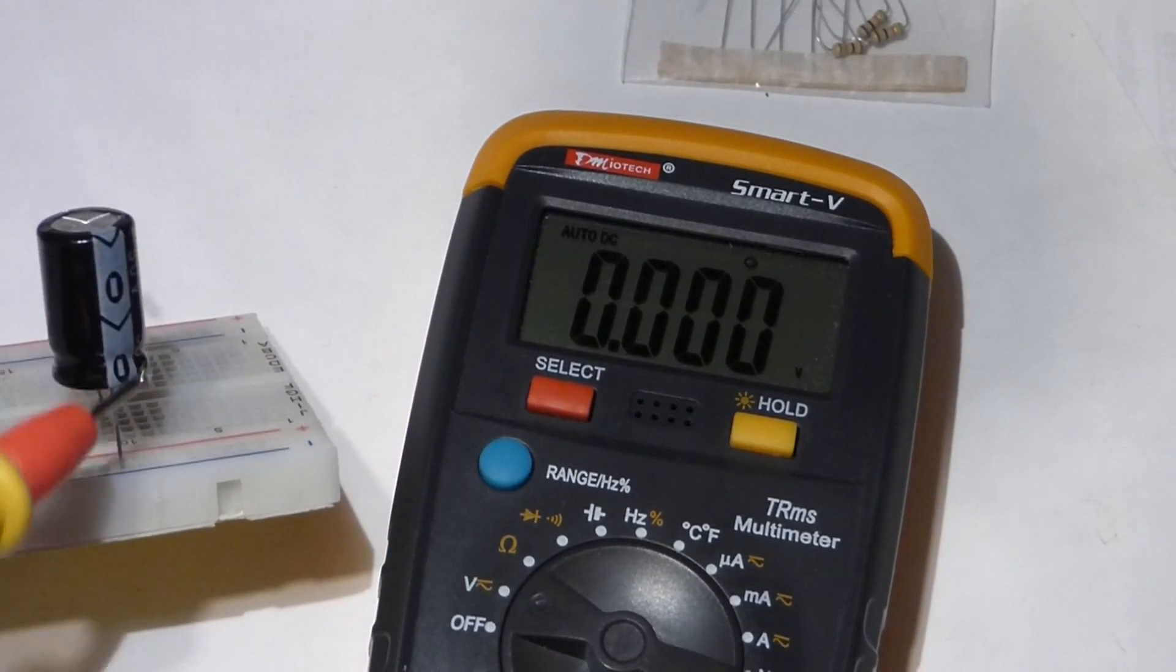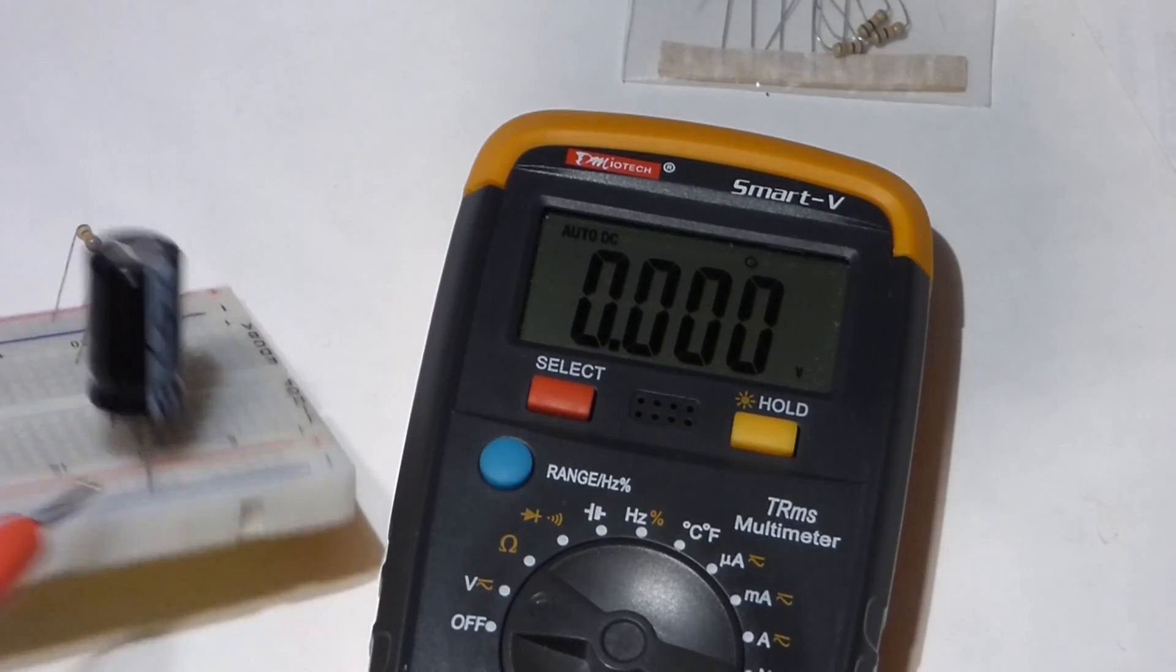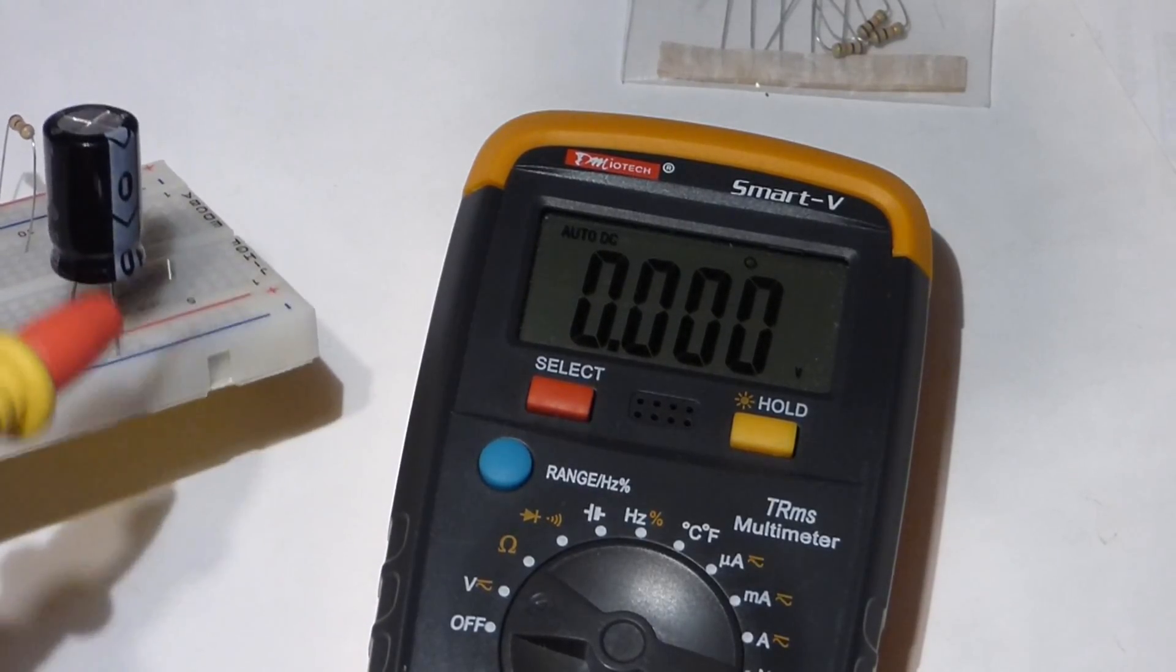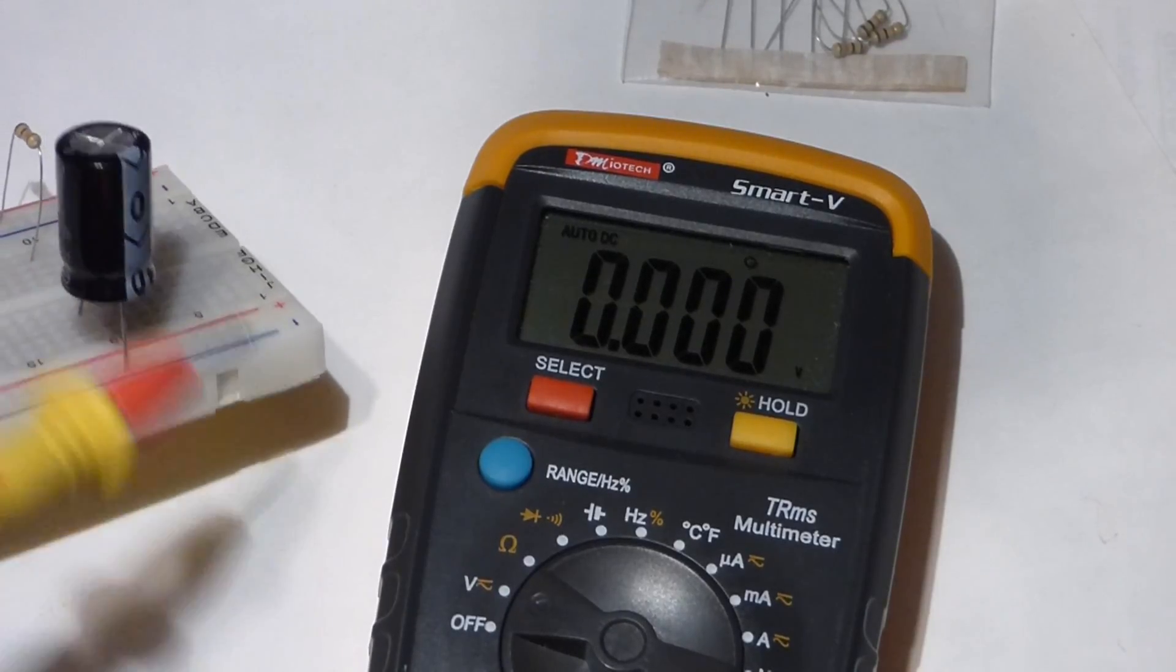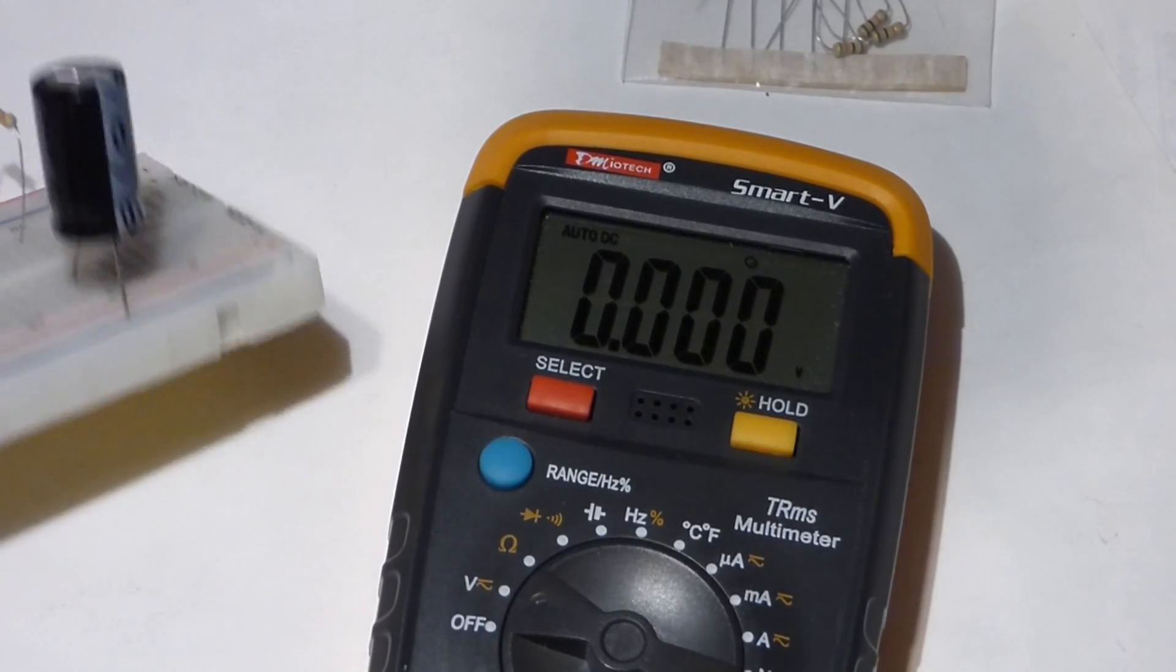Not all capacitors are polarized. As I said, this side always needs to be more negative than that side. Some of them, a lot of them actually, either side can get either charge. That's no big deal.